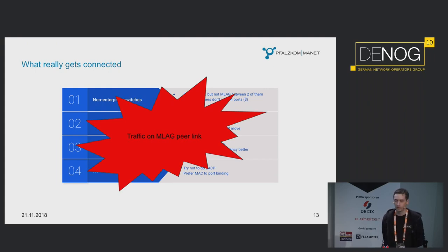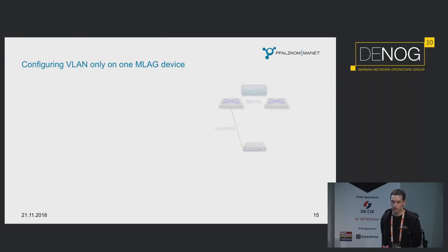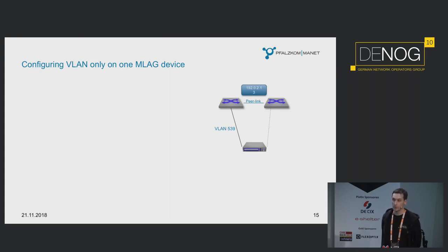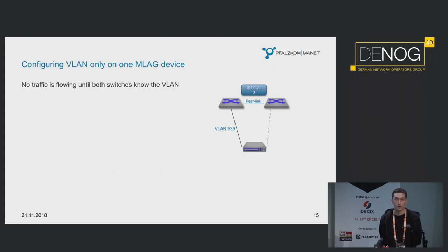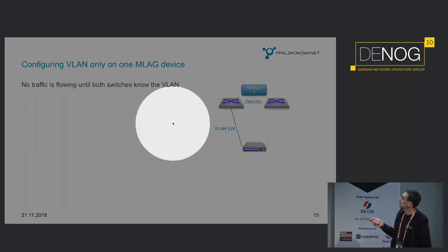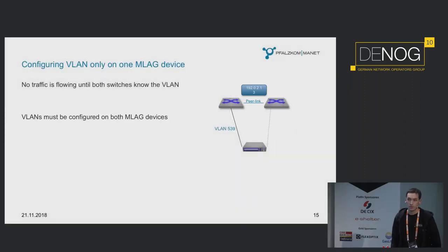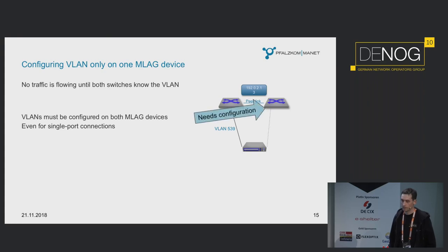So if you're planning a VXLAN deployment, you really need to think about whether the hardware you're going to connect can do MLAG or not. A common pitfall: configuring the VLAN only on one device. You might think that a single port connectivity to a customer needs configuration only on the directly connected device, but that's not right. In an MLAG pair, both switches need to know the VLANs — the right switch also needs to know the VLAN ID, otherwise there is no traffic flowing. You always need to apply the VLAN to both switches, even for single port connectivity.